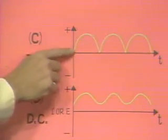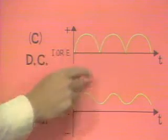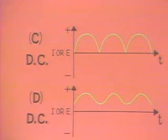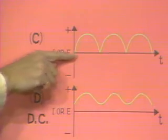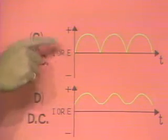Waveform C is a DC waveform, but it's a pulsating waveform. The entire waveform is in the positive area of the graph and never crosses the x-axis.